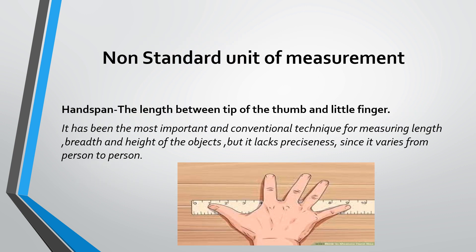Earlier, when scales and measuring tapes were not invented, people used non-standard units of measurement. First, the most basic one was hand span. What is hand span? The length between the tip of the thumb and the middle finger, as you can see in the picture. It is called one hand span.